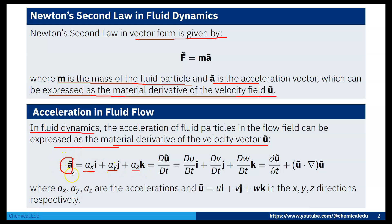We can write acceleration a = ax·i + ay·j + az·k. Acceleration can be expressed as the material derivative of the velocity field u, that is Du/Dt. Here u is the velocity vector: u = ui + vj + wk. So Du/Dt can be written as (Du/Dt)i + (Dv/Dt)j + (Dw/Dt)k — the material derivative also has three components.